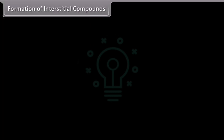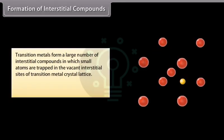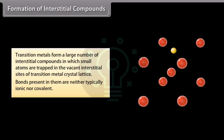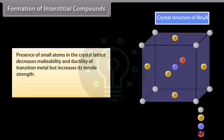Transition metals form a large number of interstitial compounds in which small atoms are trapped in the vacant interstitial sites of the transition metal crystal lattice. Bonds present are neither typically ionic nor covalent. For example, Mn₄N and Fe₃H. Presence of small atoms in the crystal lattice decreases malleability and ductility but increases tensile strength. For example, cast iron and steel are hard due to the presence of trapped carbon in their interstitial spaces. They have high melting points and are chemically inert.